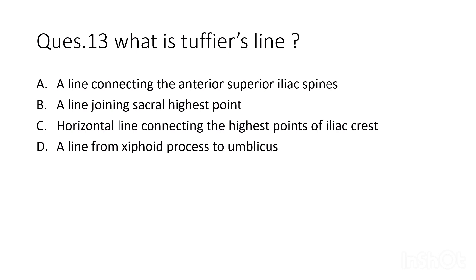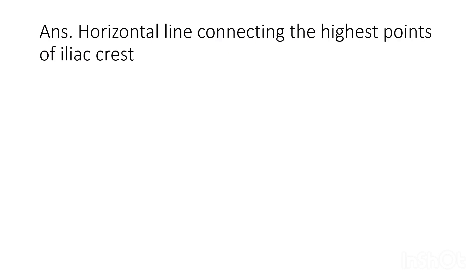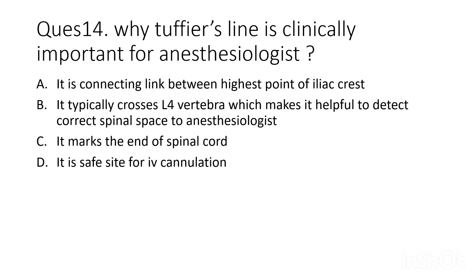Twelfth question: what is Tuffier's line? Options are: a line connecting the anterior superior iliac spine, a line joining the sacral highest point, a horizontal line connecting the highest points of the iliac crest, or a line from the xiphisternum to the umbilicus. The correct answer is a horizontal line connecting the highest points of the iliac crest.